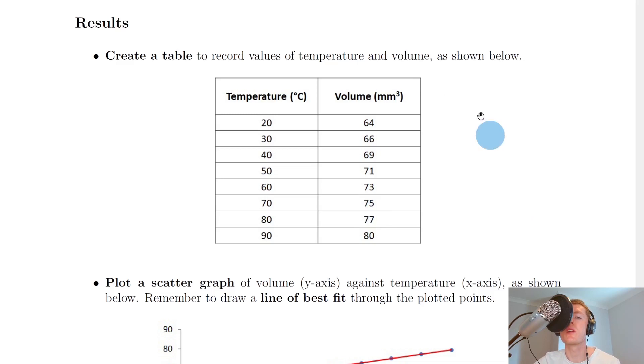Going back to the notes, we can see a table you could record during the experiment with values of temperature and volume. Temperature in degrees Celsius and volume in millimeters cubed or centimeters cubed. I did steps of 10 degrees Celsius from 20 up to 90 degrees and noted down the corresponding volume readings.